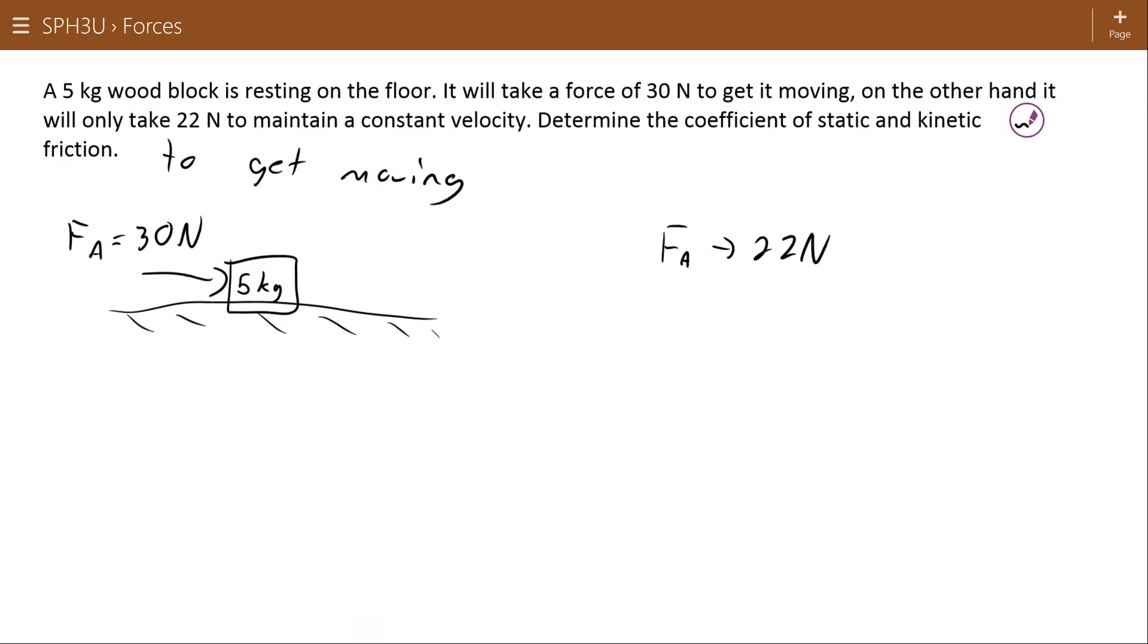To get it moving, we're assuming it was at rest to begin with. This is going to be our static situation. It takes an applied force of 30 newtons to get it moving, so we're going to assume the force of friction that that is overcoming is less than 30 newtons. We could put in 29.9 here, but we're just going to work with a force of friction of 30 newtons. Here we have a gravitational force of negative 49 newtons. And as a result, a normal force of 49 newtons.